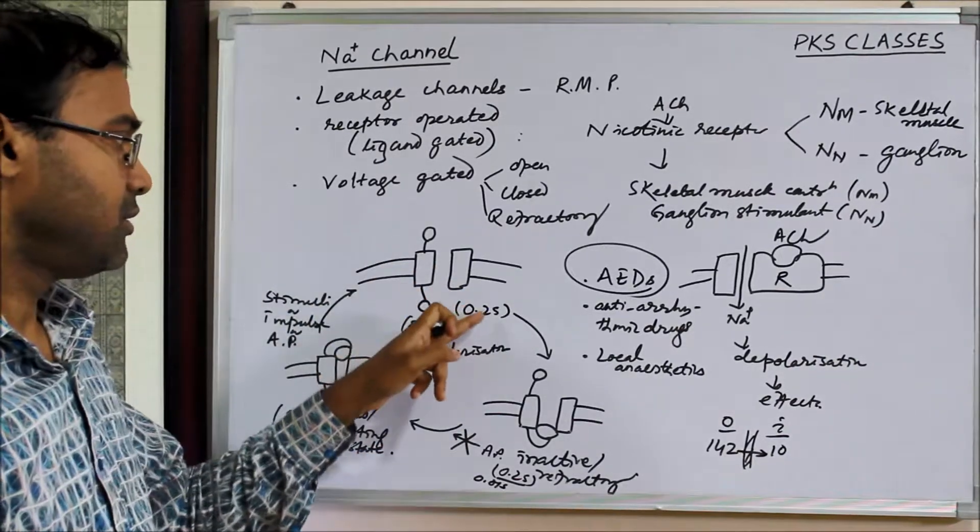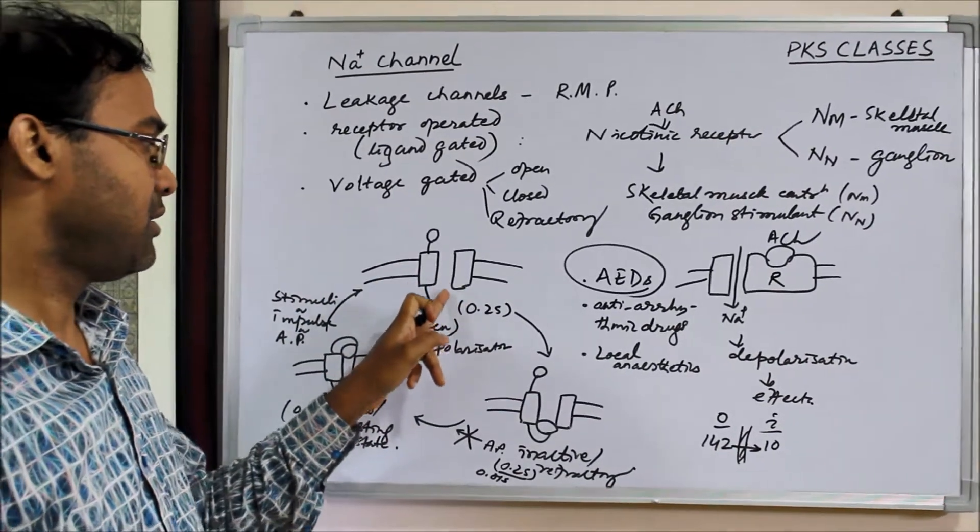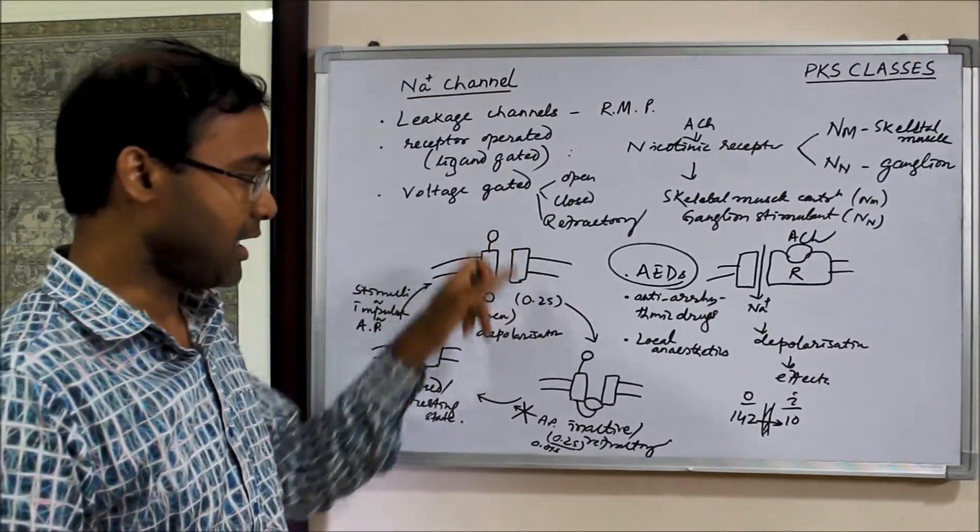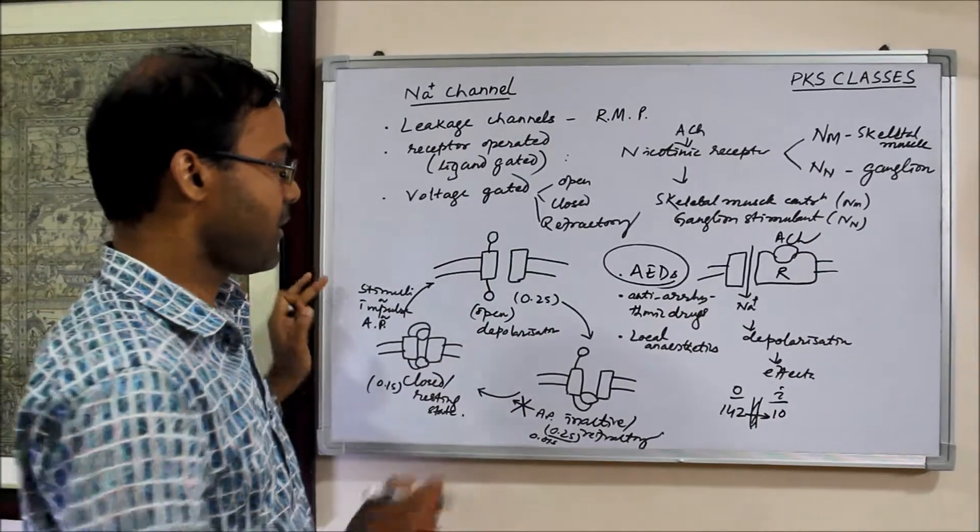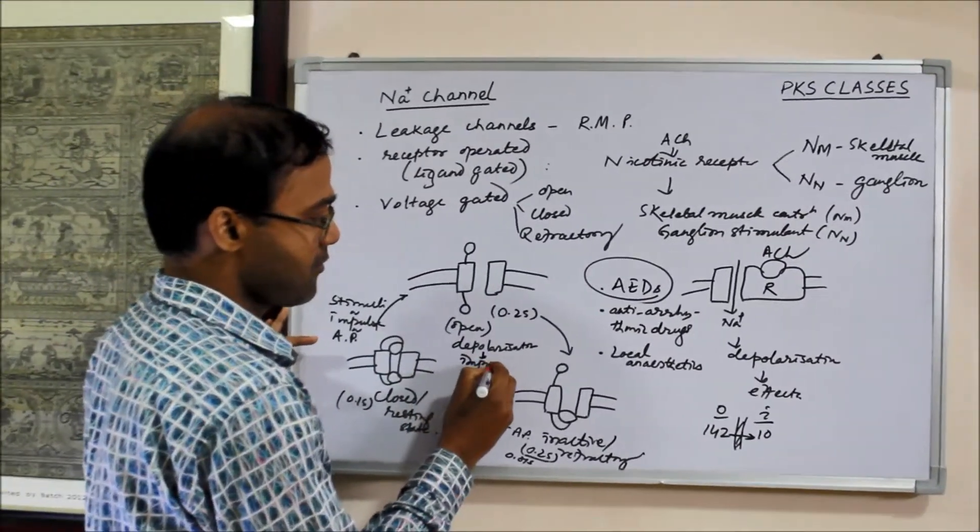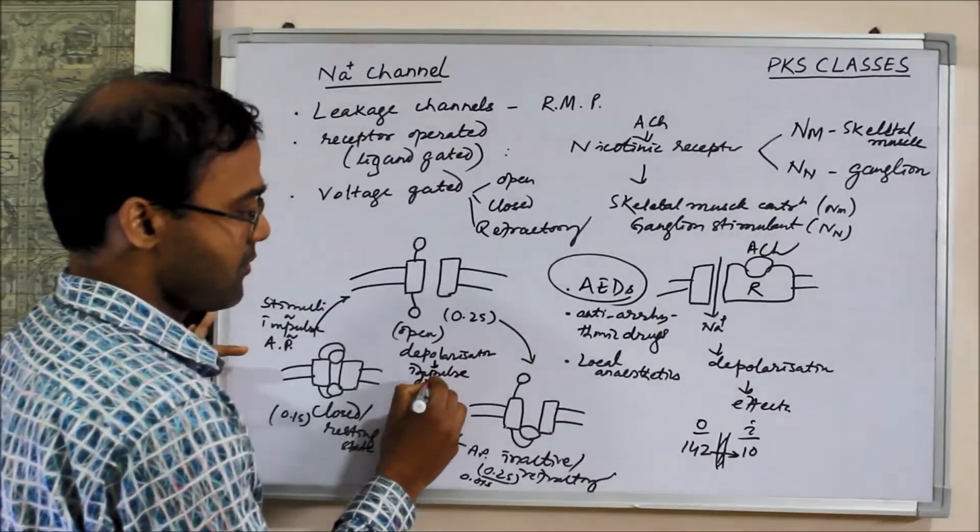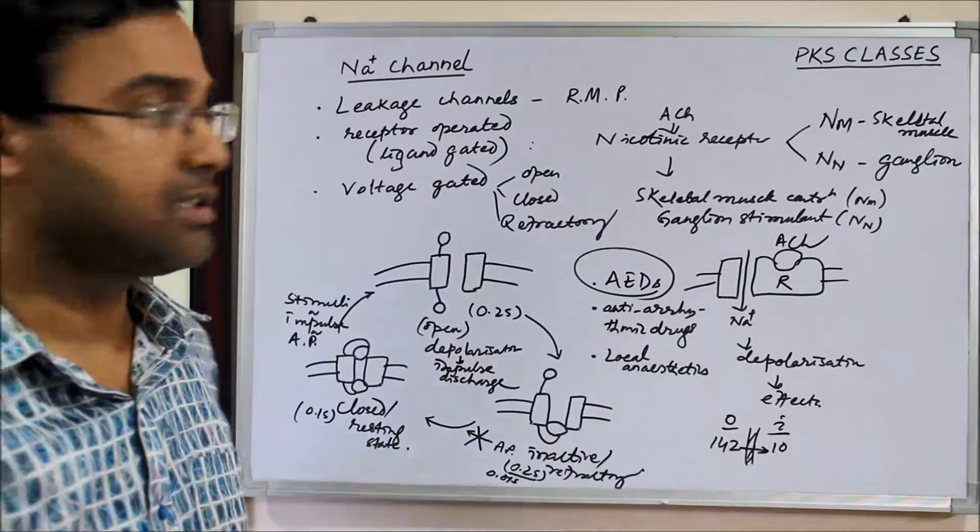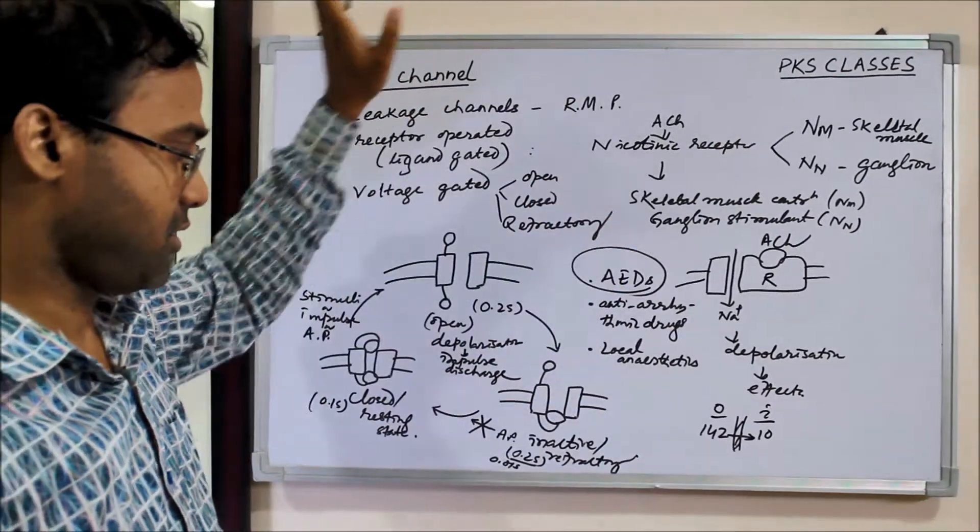Quickly, this channel from this state will come back to this closed state, and another stimuli will again open, again impulse discharge. This leads to impulse discharge and this causes high frequency discharges and leads to seizures and epilepsy occurs.